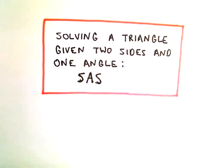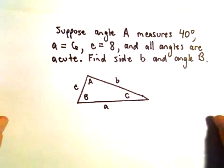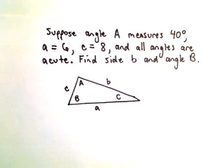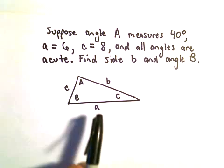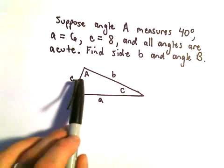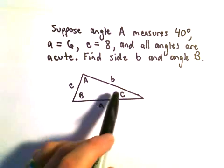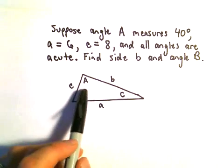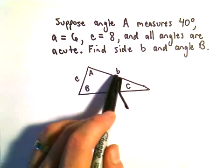Alright, in this video we're going to do an example of finding a missing angle and a missing side length. Suppose we've got our triangle here. We know that angle A measures 40 degrees. Little a has length 6. Little c is length 8. We don't know angle C, we don't know angle B, and we don't know the side length for little b.